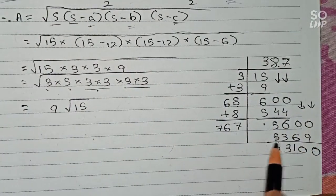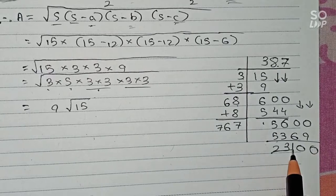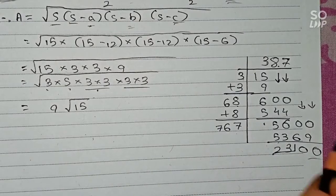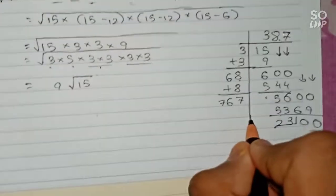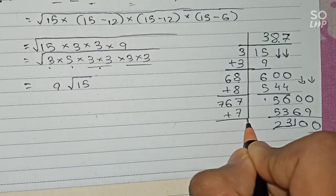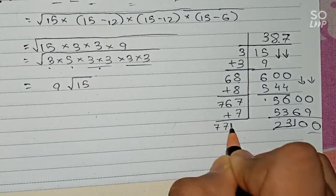5600 minus 5369, that is 231, and two zeros come down. So 767 plus 7, that will become 7742.